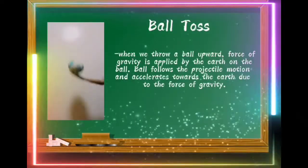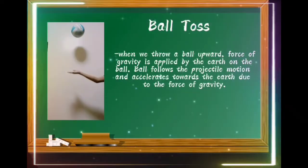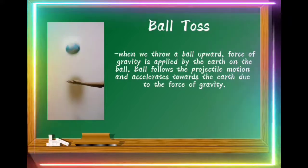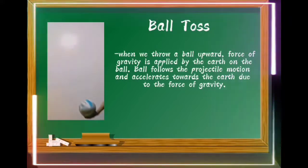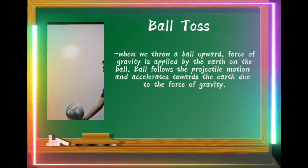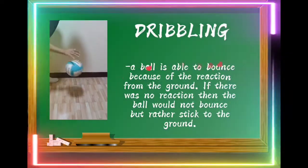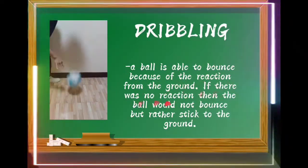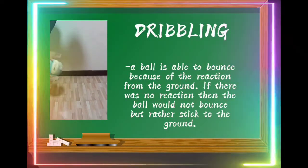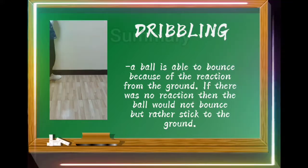Ball toss: When we throw a ball upward, the force of gravity is applied by the earth on the ball. The ball follows projectile motion and accelerates towards the earth due to the force of gravity. Dribbling: A ball is able to bounce because of the reaction from the ground. If there was no reaction then the ball would not bounce but rather stick to the ground.